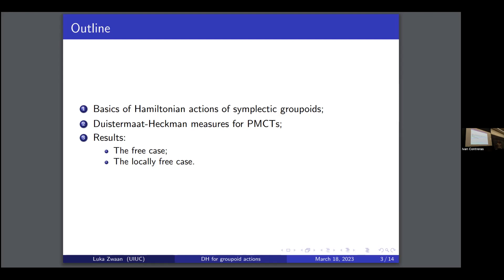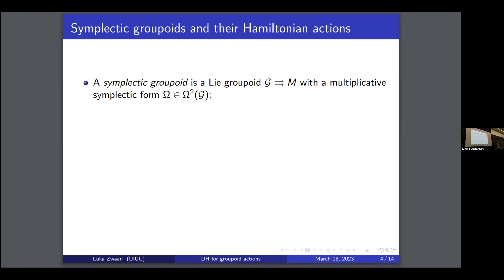A symplectic groupoid is just a Lie groupoid with a multiplicative symplectic form, which are now well known to be global objects associated to Poisson manifolds. When you have such a thing, you induce a Poisson structure on the base, and this groupoid integrates the cotangent algebroid.